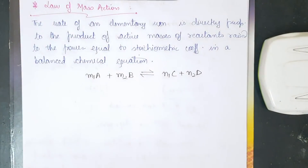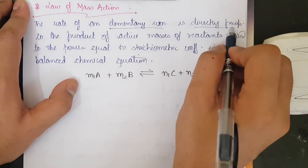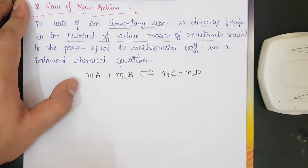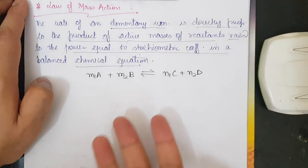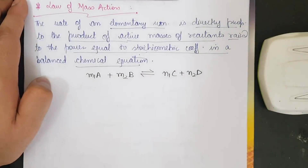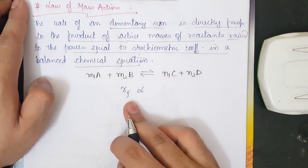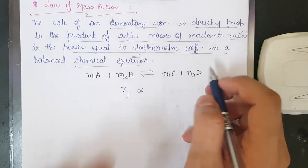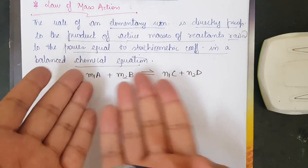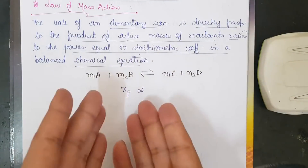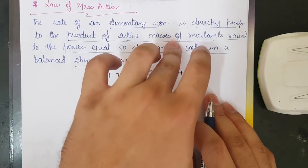Now let us focus on Kc and the Law of Mass Action. The statement is: the rate of an elementary reaction is directly proportional to the product of the active masses of the reactants raised to the power equal to their stoichiometric coefficients in a balanced chemical equation. For the forward reaction, the reactants dissociate or disintegrate to give the products.